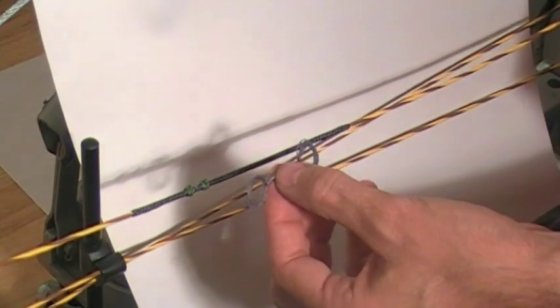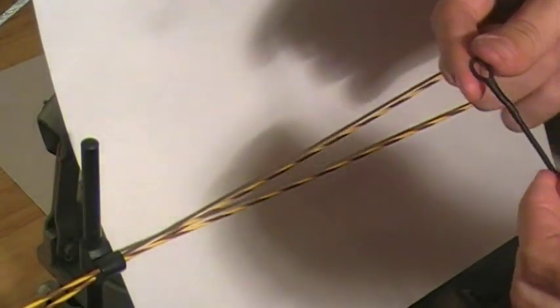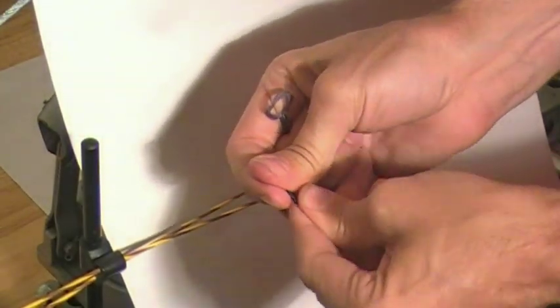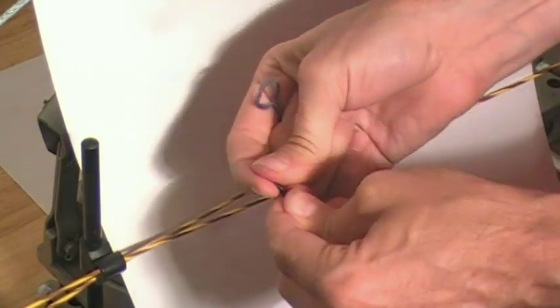To install the loop this way, we actually need to remove the string from the bow. Squash down the bowstring loop just a little bit to make it easier to put through here. Set that aside.